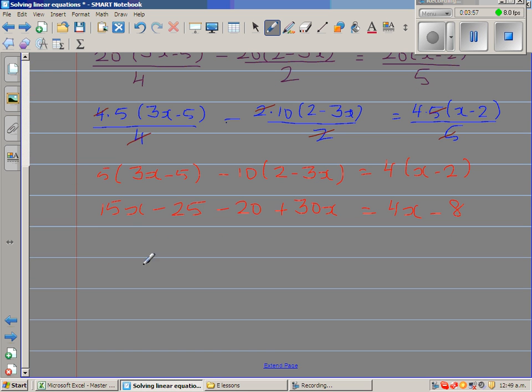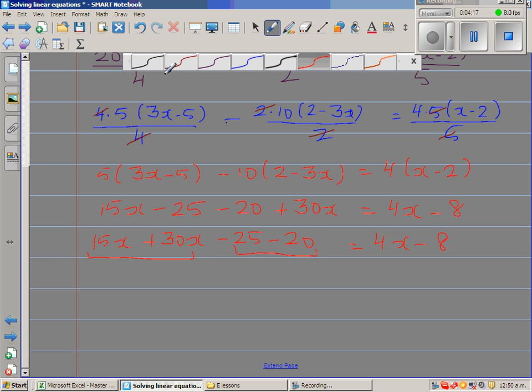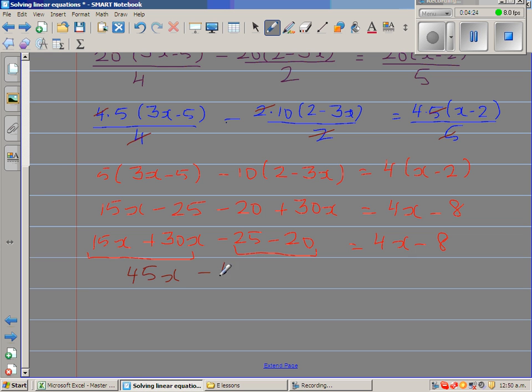Let me simplify the left hand side. So I will write the next step. So this is 15x plus 30, I am grouping the like terms. Minus 25 minus 20 is equal to 4x minus 8. So this simplifies and this also simplifies. So this is 45x minus 45 is equal to 4x minus 8.